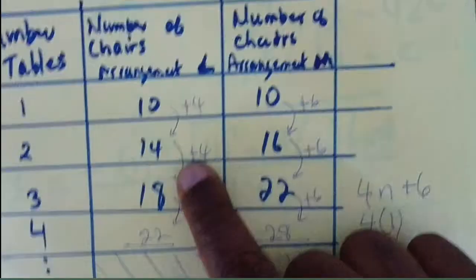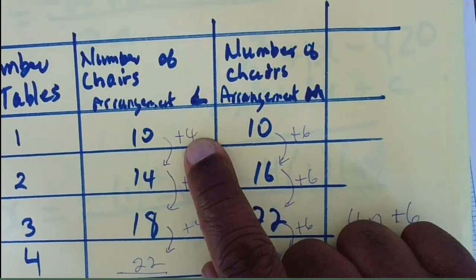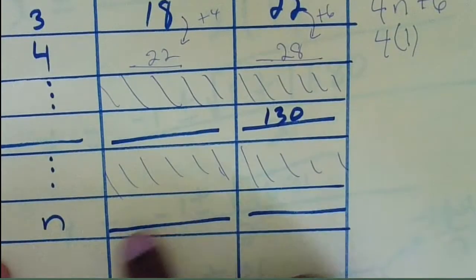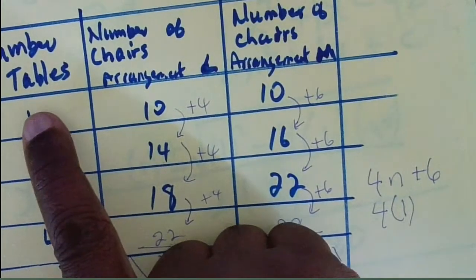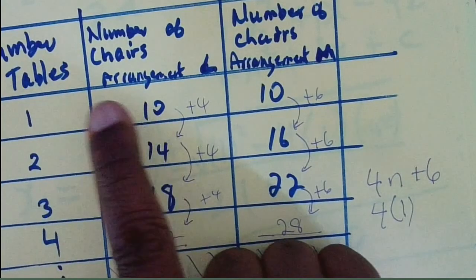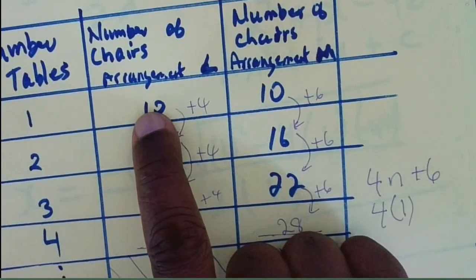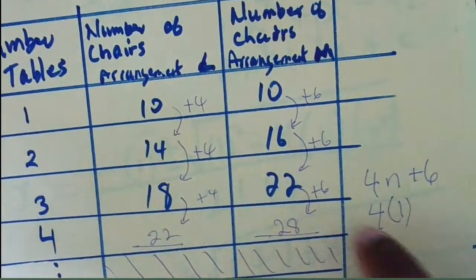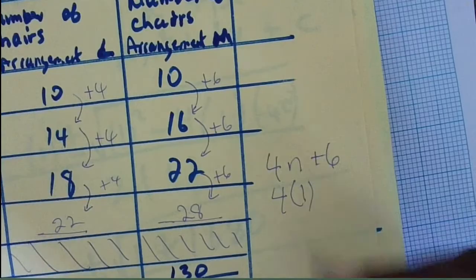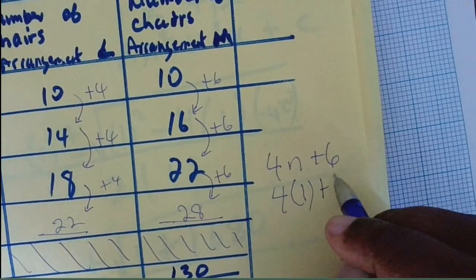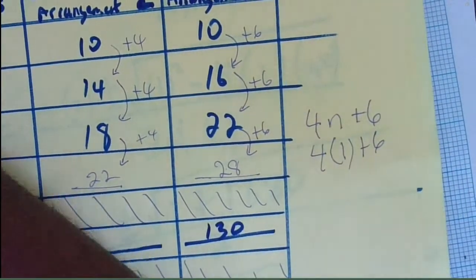For Shanti: the common difference is 4. When I multiply 4 by n — and n is 1 — 4 times 1 is 4. We need how much more to get 10? 6. So 4n plus 6 will give us 10.